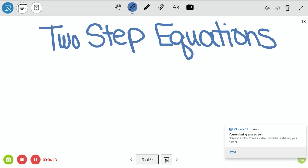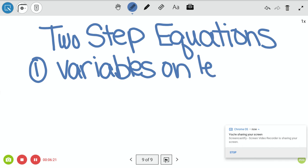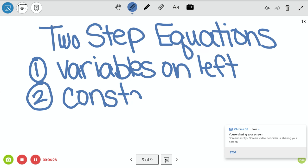Alright, so the first thing we want to do is we want to get variables on the left. So variables on the left. Alright, the second thing we're going to do is we are going to put constants on the right. Constants mean a number without a variable.